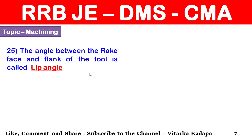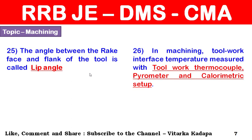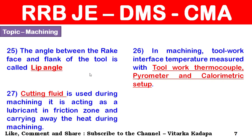The angle between the face and flank of the tool is called the lip angle. In machining, the tool-work interface temperature is measured with three types of devices: tool-work thermocouple, pyrometer, and calorimetric setup. Cutting fluid is used during machining as a lubricant in the friction zone and for carrying away heat.